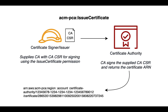Next, the issue certificate command is used, which requires the previously retrieved CSR file. This command sends the CSR file to the certificate authority for signing, which is then returned as a Certificate ARN. Below, there's an example of what an ARN looks like.